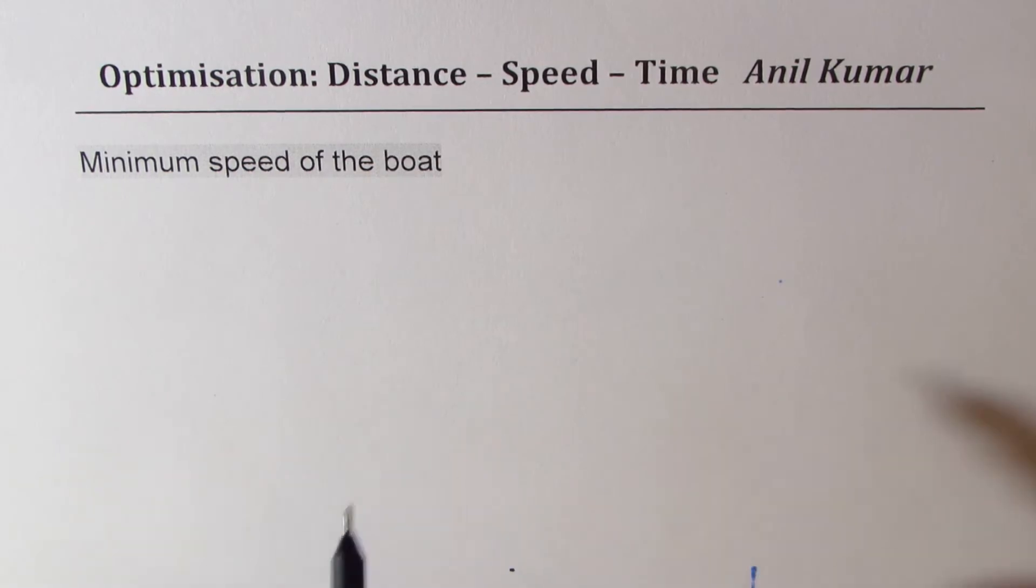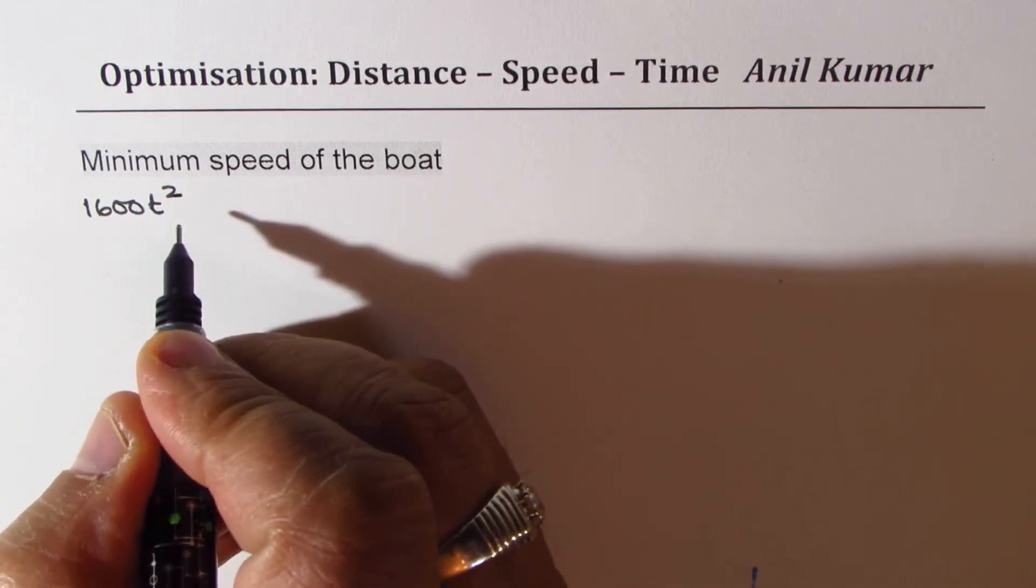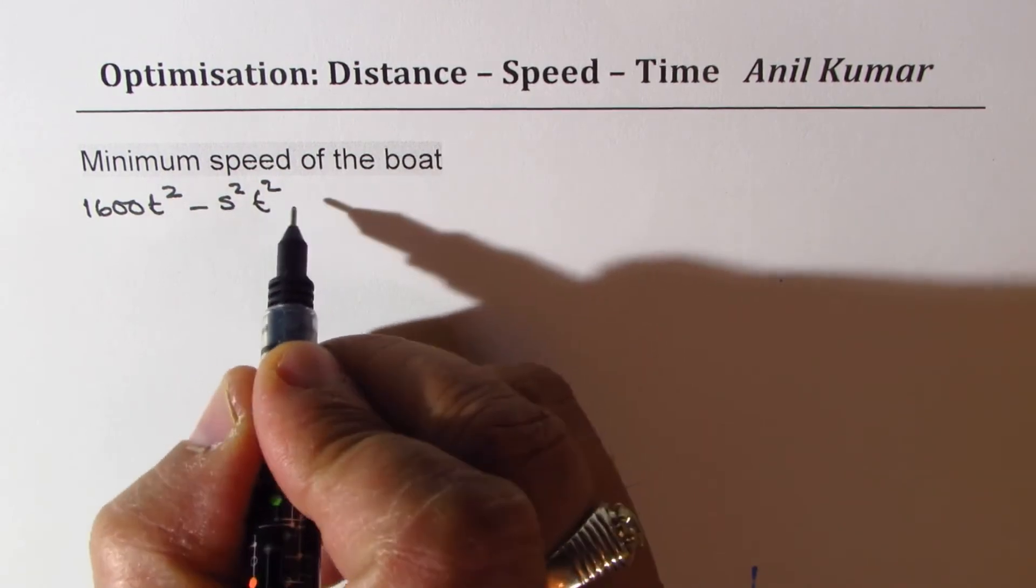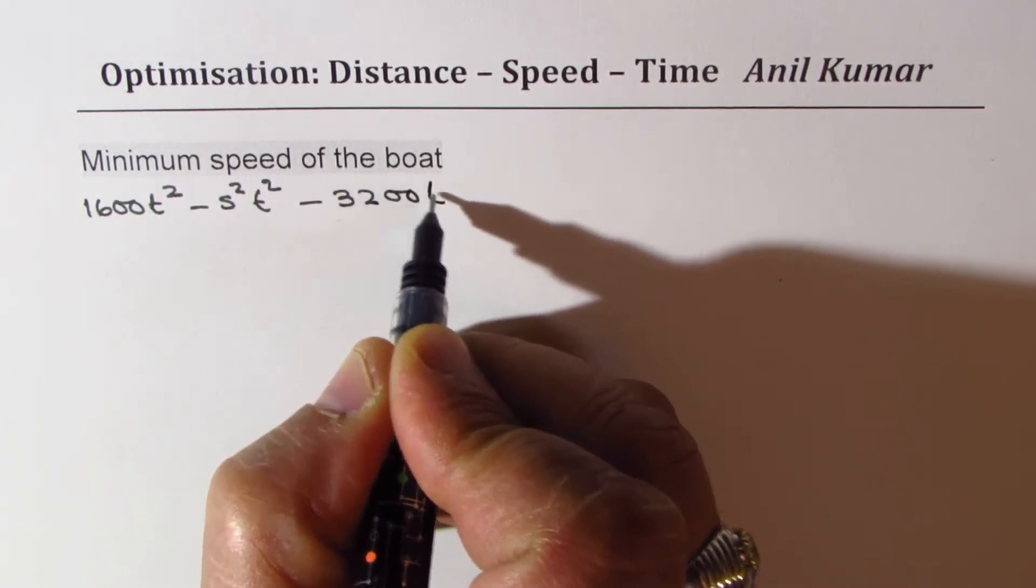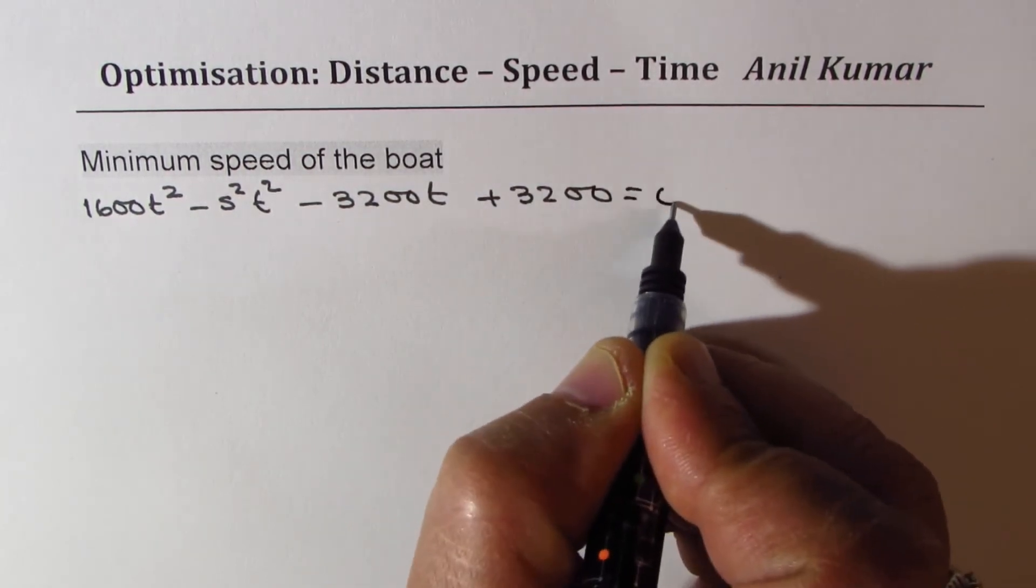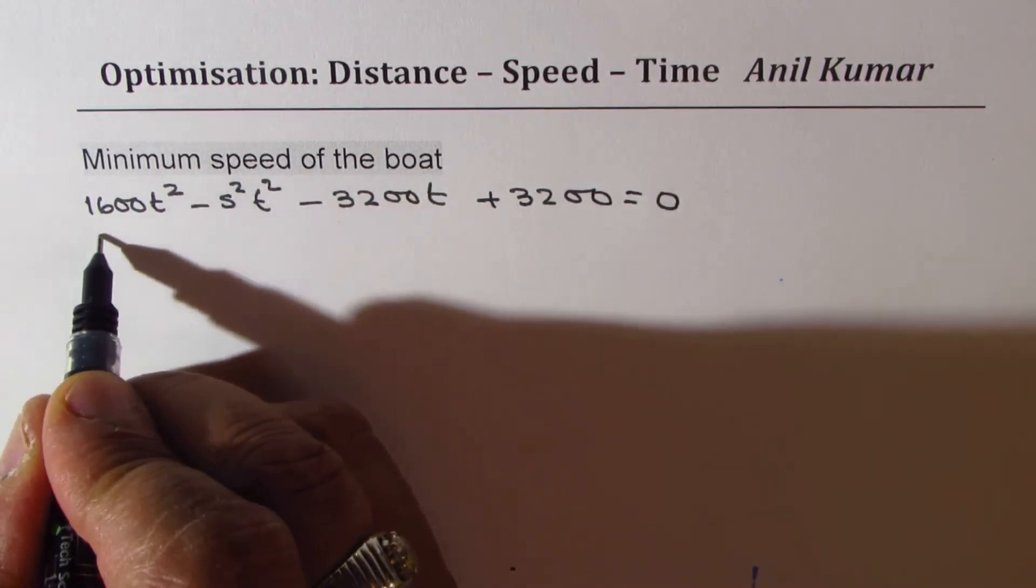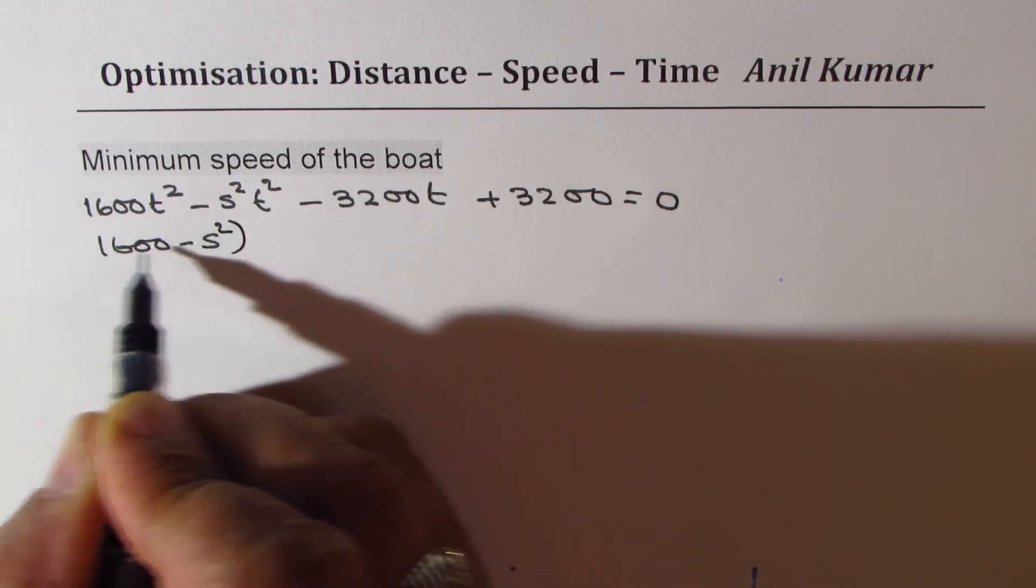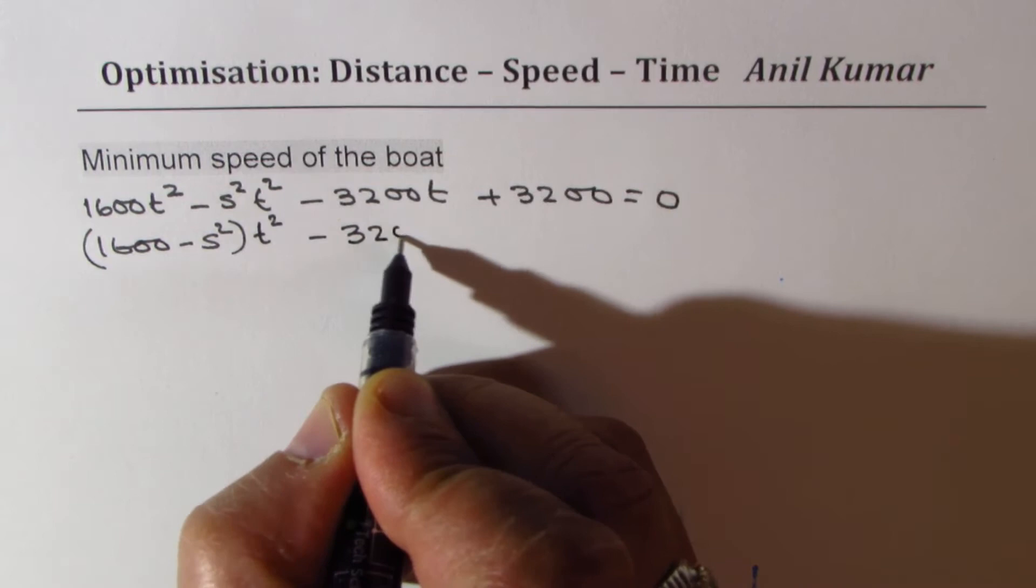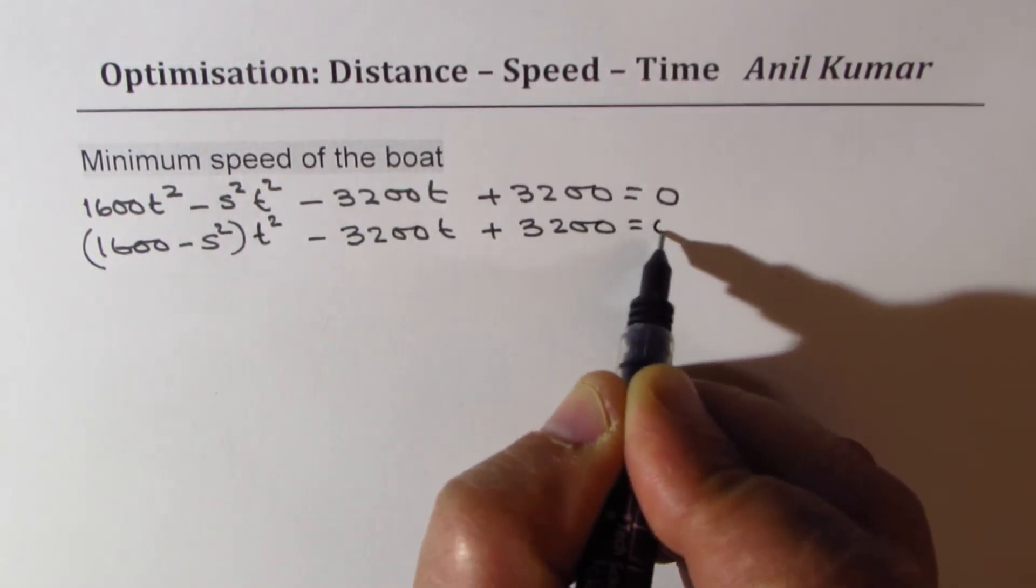Let me write down 1600 t squared, then the t terms minus 2 times 1600 is 3200 t. We have 1600 and then again 1600. Bringing it to the left side, we get minus s squared t squared equals 0. So if I combine, I get (1600 - s²)t² - 3200t + 3200 = 0.